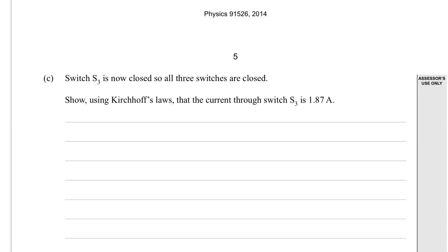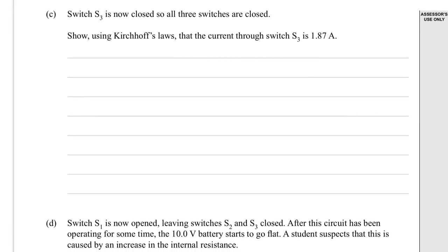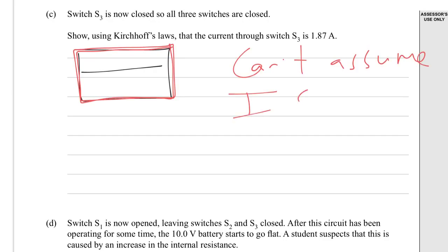Question C. Switch S3 is now closed so that all three switches are closed. Using Kirchhoff's laws, the current through S3 is 1.87 amps. So we're going to need a loop around the outside. We're going to have to draw a loop all the way around the outside this time. And we can't assume that the current is the same, so we must do a new voltage loop with new I values. We can't just take that current value that we had above.